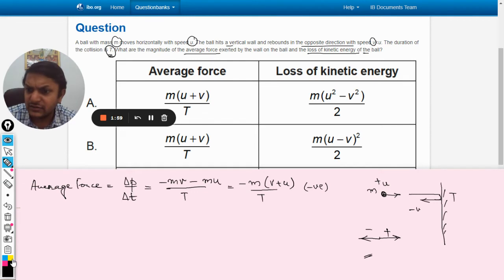So there's the force here towards the left, which is negative. So that is why we have negative here. So we see the A option, the average force is m into (u plus v) by T.